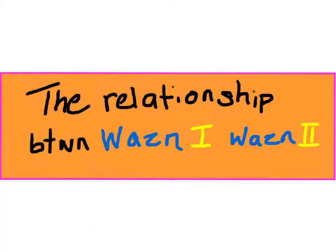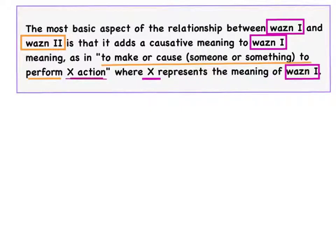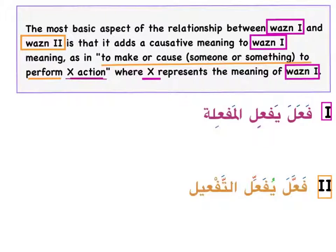Now let's look at the relationship between wazn 1 and wazn 2. The most basic aspect of this relationship is that wazn 2 adds a causative meaning to wazn 1 — as in, to make or cause someone to do something, to perform action X, where X represents the meaning of wazn 1. Let's look at wazn 1 and wazn 2 together.